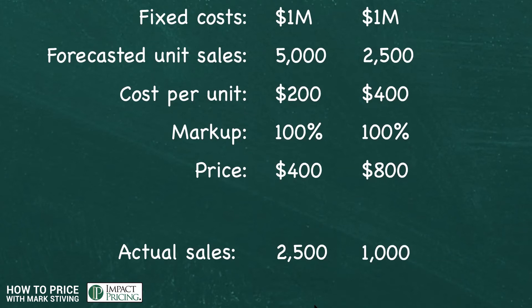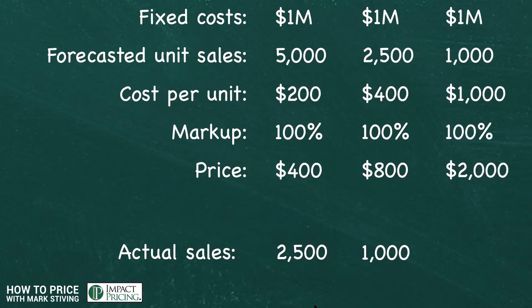So let's say we only sell 1,000 units. We go through the math again — we've put 1,000 in instead of 2,500. Now we've got a $1,000 cost. We want our 100% markup. We have a $2,000 price. How many are we going to sell now? This is a death spiral. If all we're going to use is forecasted unit sales to allocate our fixed costs and then use cost-plus pricing, we are at very big risk of charging prices that nobody would ever pay us.